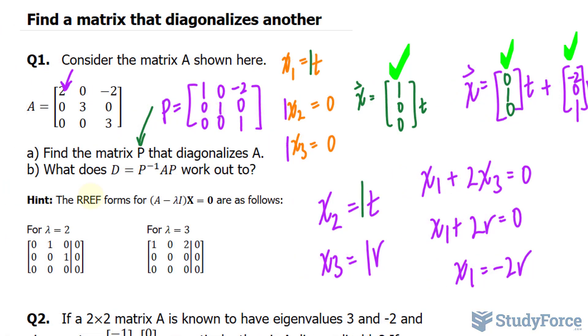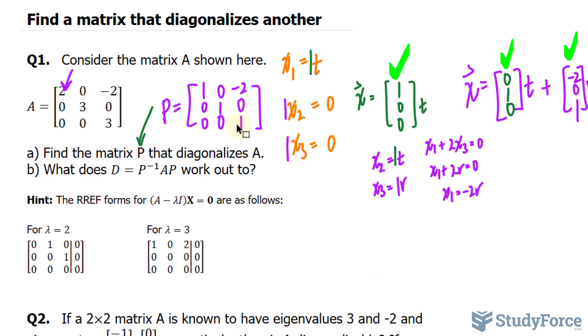The next question reads, what does D equal to the inverse of P times A times P work out to? So we've done a video on this already about diagonalizing a matrix. Now that I've made some room, we have to find the inverse of this matrix. To find the inverse of a 3x3 matrix, you have to find its determinant, and then transpose the matrix by changing the rows with the columns.